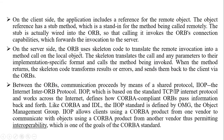The skeleton code is called to invoke using the skeleton, translating the remote invocation into the method called on a local object. The skeleton translates the call and any parameters to their implementation-specific format and calls the method being invoked. When the method returns, the skeleton code transforms the result or errors and sends them back to the client via ORB.